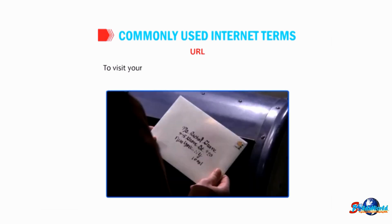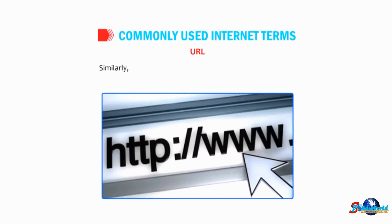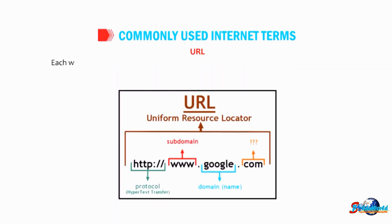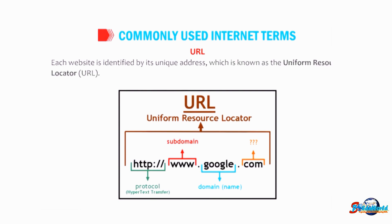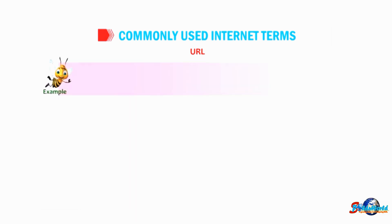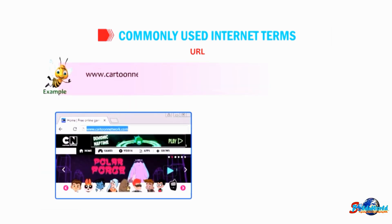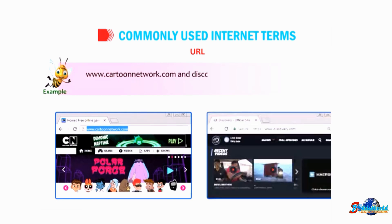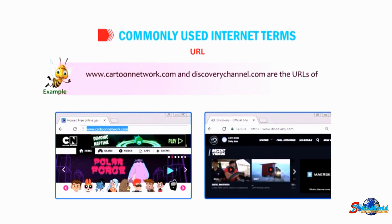URL — to visit your friend's place you need to know his address; similarly, to visit any website you need to know its address. Each website is identified by its unique address, which is known as the Uniform Resource Locator, or URL. The URL of any website is entered in the address bar of a web browser. For example, www.cartoonnetwork.com and www.discoverychannel.com are the URLs of Cartoon Network and Discovery Channel respectively.